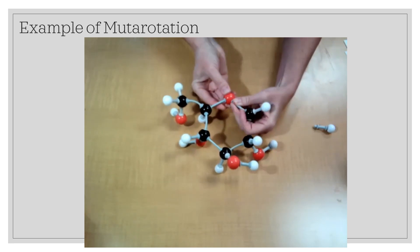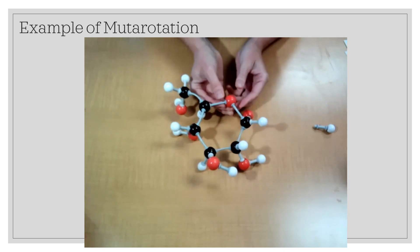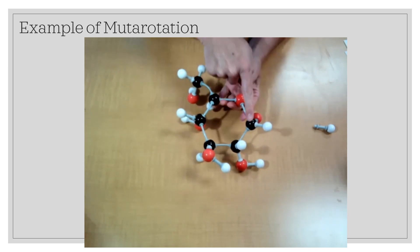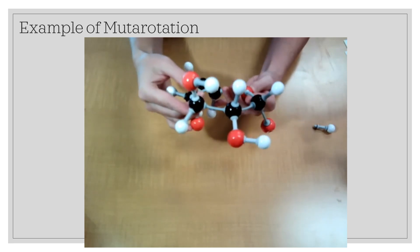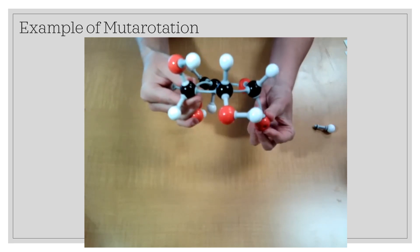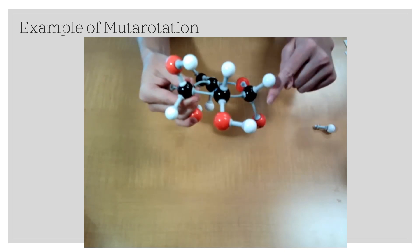So here we've broken the other carbonyl bond to form our cyclic hemiacetal. Here's our oxygen in the middle. There's C1. That's our anomeric carbon. When we do this, notice now that my hydroxyl on C1 is pointed down.